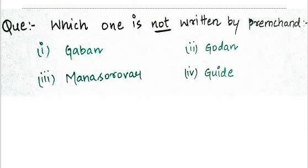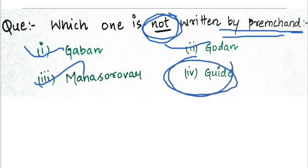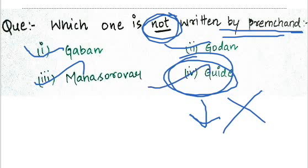Next question: Which of the following is not written by Munshi Premchand? Gaban is written by him, Godan is written by him, Mansarovar is written by him. So the answer is going to be Guide. Obviously he is a Hindi novelist, so Guide was not written by him.